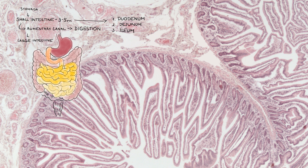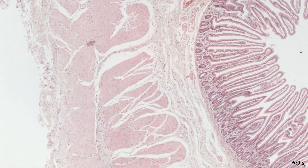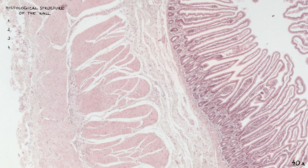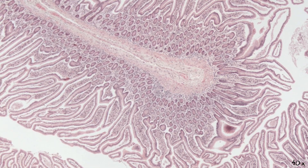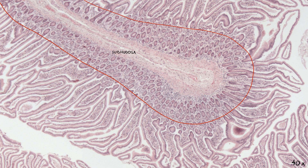We are now looking at the duodenum, but the general histological structure of the wall is the same in all its segments. It comprises four layers: mucosa, submucosa, muscularis, and serosa or adventitia. There are permanent circular or semilunar folds consisting of mucosa and submucosa called Plicae circulares, which are best developed in the duodenum and jejunum and subsequently disappear in the ileum.